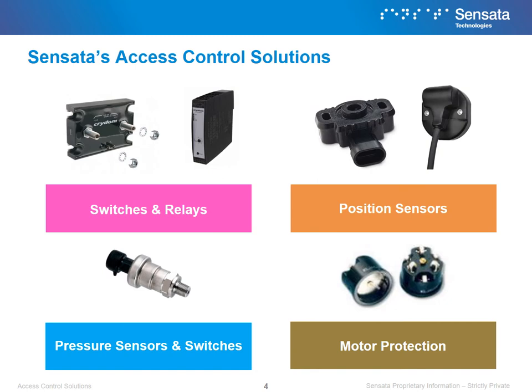Sensata produces four main types of components that are critical for access control applications. They are switches and relays, position sensors, pressure sensors and switches, and motor protection. In the following slides, we will cover how each component helps overcome the challenges faced in access control.